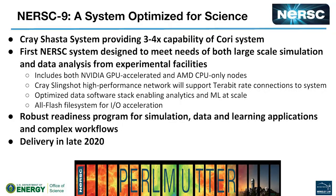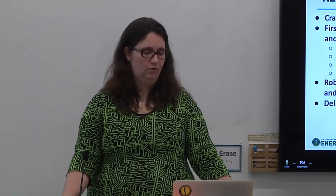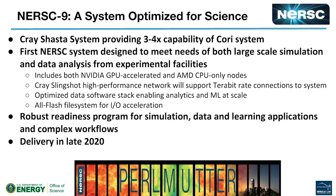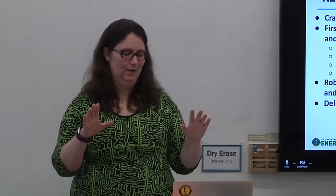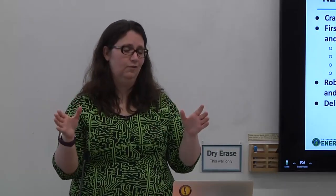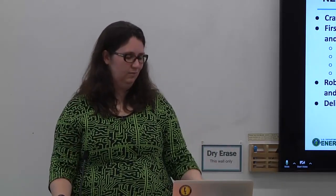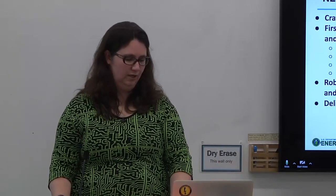Perlmutter is the ninth machine we've had, which is why it's called NERSC9. It's going to be a Cray Shasta system, three to four times more powerful than Cori. This is the first system we've really designed to meet the needs of both simulation and data analysis from experimental facilities combined into one machine. This is just an example of what it could look like — you do get a cool mural on the front when you pay a lot of money for a supercomputer.